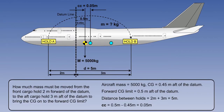Now we will look at a practical example, using the formula to find out how much mass must be moved to bring the centre of gravity into limits. In the example on screen, the centre of gravity is forward of limits by 0.05 of a metre, and it is required to find out how much mass, m, must be moved from hold A to hold B, to bring the centre of gravity onto the forward limit, 0.5 metres aft of datum.